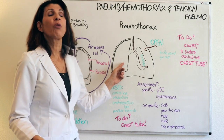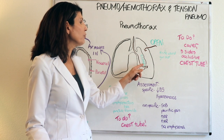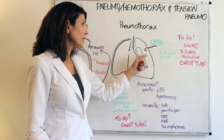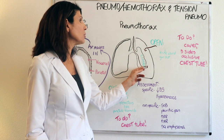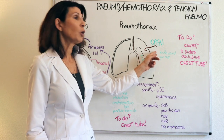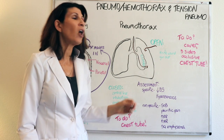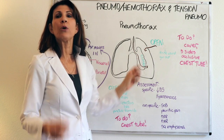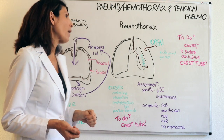What happens in a pneumothorax is that there is some loss of integrity of either the visceral pleura — attached directly to the lung surface — or the parietal pleura — attached directly to the chest wall — that enables air to get in between those two pleura. That is called a pneumothorax.